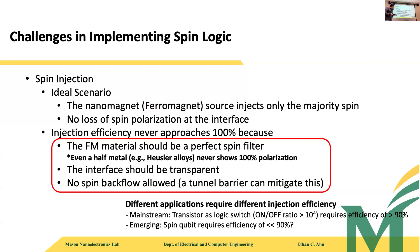If we use spin for qubits, we don't necessarily need transistors and may not need that high a perfection level. For implementing some sort of qubit, we don't need injection efficiency as high as 90%. Nobody has measured the exact number needed yet, but it may be more feasible for quantum applications.